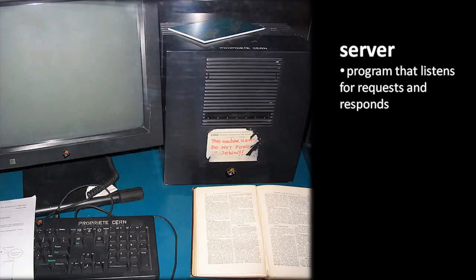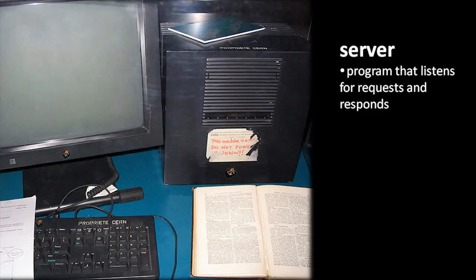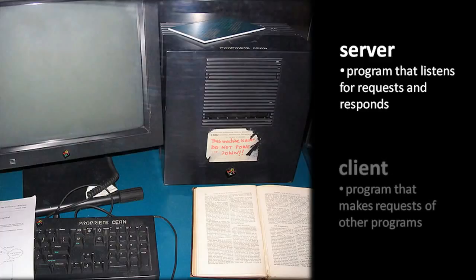The goal of a computer network is to allow programs running on computers to send data to other programs running on other computers. When we talk about programs that make use of the network, we divide them into two broad categories. A server is a program which primarily listens on the network for requests coming from other programs and then responds to those requests. A client, in contrast, is a program which makes requests.